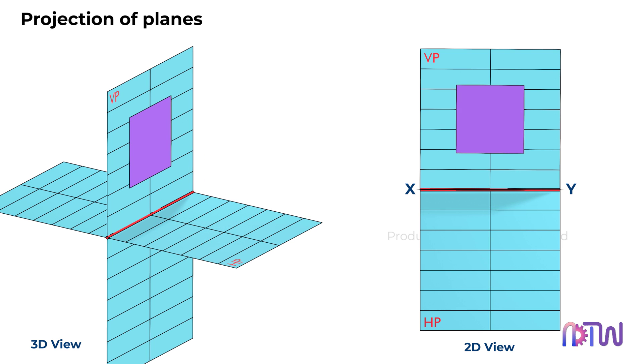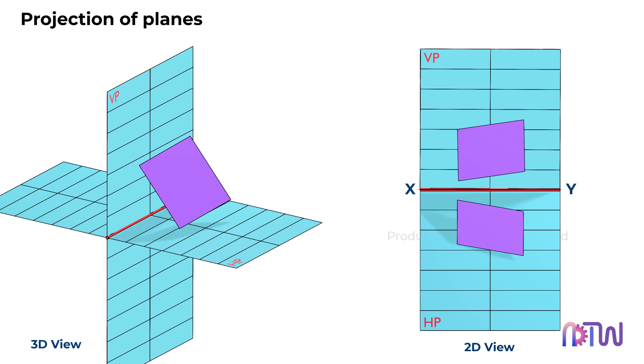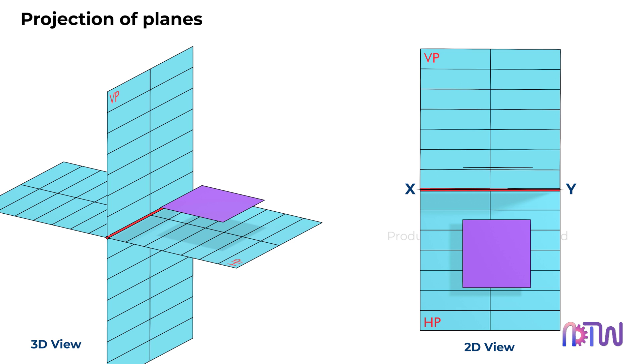Similarly, it can rest on the vertical plane, either parallel or inclined. Imagine a square plane resting on the HP in a parallel orientation. This is one of the simplest cases.